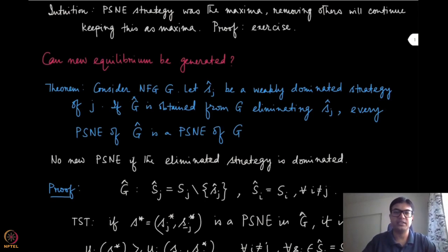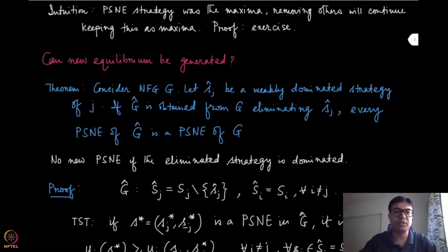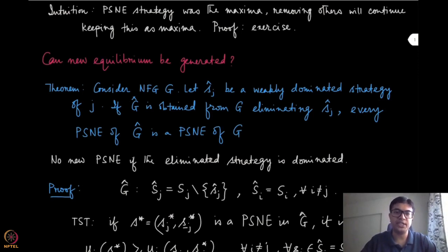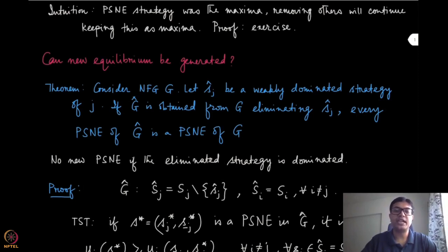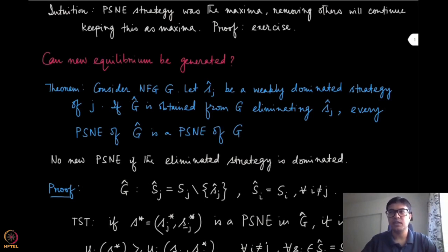Let us formally state the result. Consider a normal form game G. Suppose S_J-hat is a weakly dominated strategy of player J, and G-hat is obtained from the original game G by eliminating S_J-hat. Then every pure strategy Nash equilibrium of the reduced game G-hat is a pure strategy Nash equilibrium of the original game G.